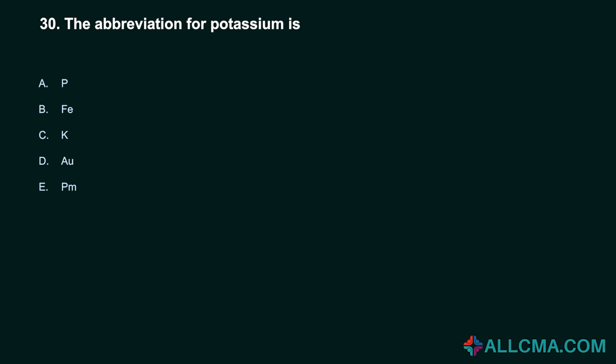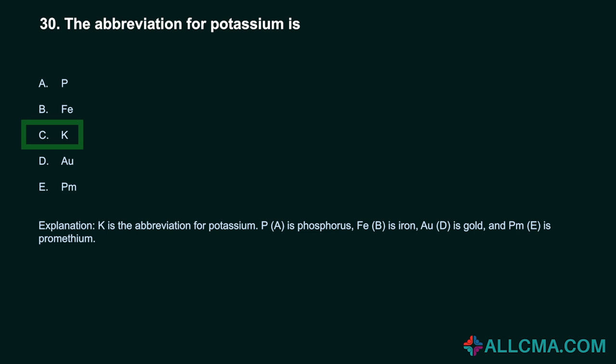Question 30: The abbreviation for potassium is: A. P. B. Fe. C. K. D. O. E. Pm. Correct answer: C. K. K is the abbreviation for potassium. P is phosphorus. Fe is iron. O is gold. Pm is promethium.